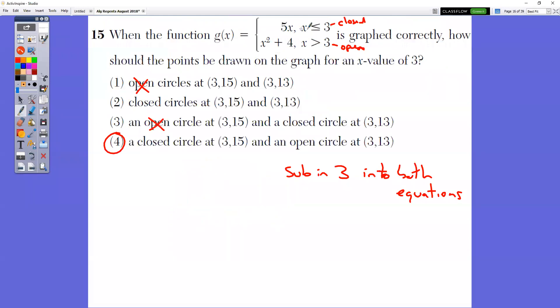In question number 15, when you go to graph this correctly, how should the points be drawn? Well, an or equal to represents a closed dot. A greater than is an open dot. So it's a closed circle at 315 and an open circle at 313. How do you know if it's choice three or four? You have to take those x values and sub them in.